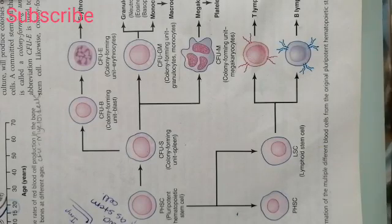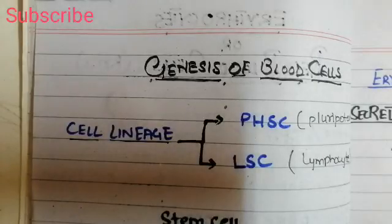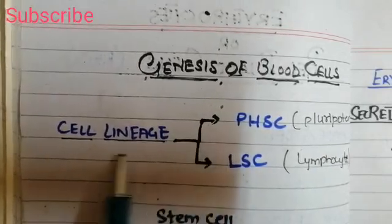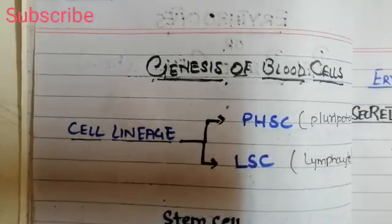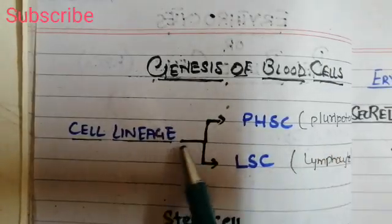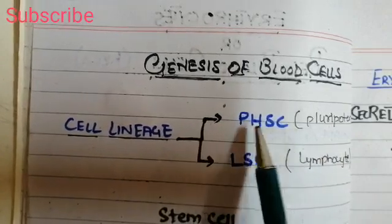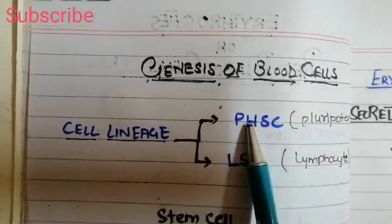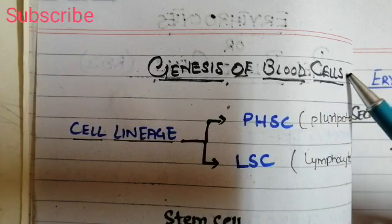Today we will discuss the genesis and the production of the different blood cells in the body. This genesis starts from the cell lineage, which is the history of a cell through which it goes and develops into a mature cell. This cell lineage starts from the pluripotent hemopoietic stem cell, which is present in the bone marrow at the time of birth and in the adult stage when the genesis of blood cells begins.